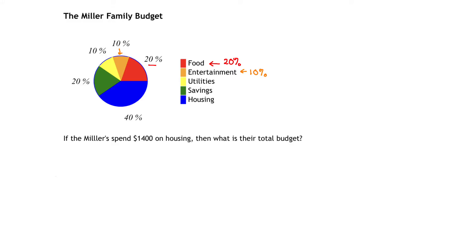Now the question we are being asked is: if the Millers spend $1,400 on housing, then what is their total budget? $1,400 is spent on housing, and housing is represented in this pie chart by the blue color. That represents 40% of the entire budget — 40% of the Millers' entire family budget is spent on housing.